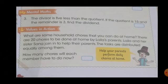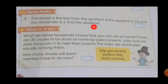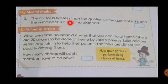Now, question number 3, Mental Maths. The divisor is 5 less than the quotient. If the quotient is 15 and the remainder is 3, find the dividend. So here we have to find out the dividend, and we also have to find out the divisor. Here is a hint to find the divisor: the divisor is 5 less than the quotient.